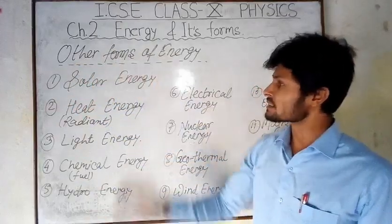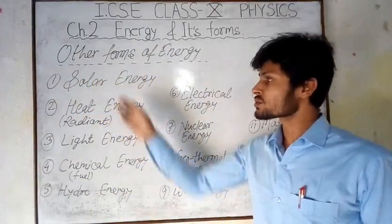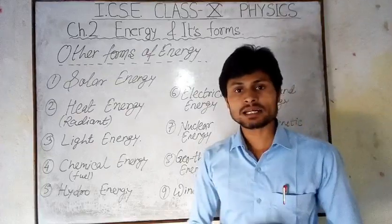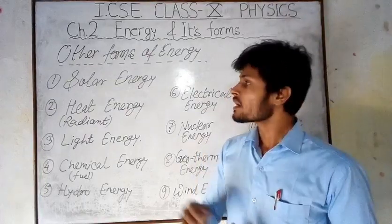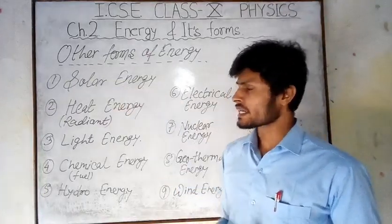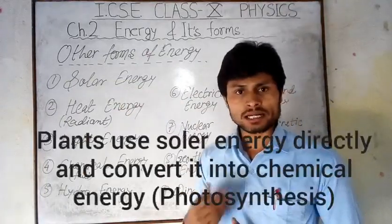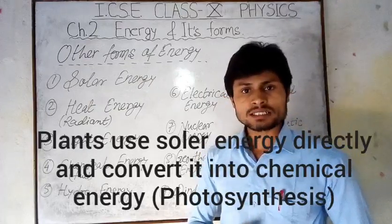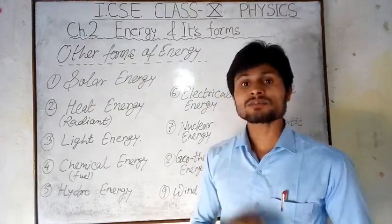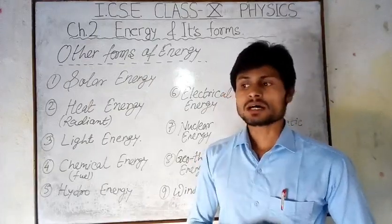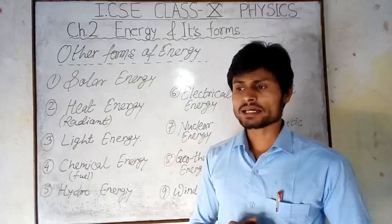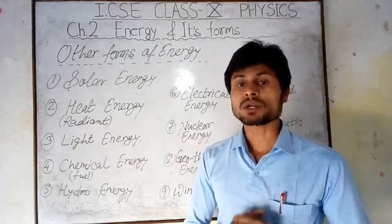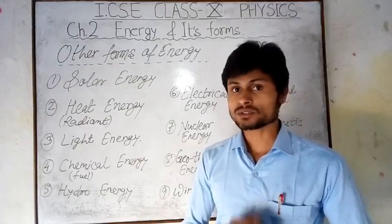Now the other forms of energy. First is solar energy — the energy radiated out by the sun. This energy cannot be used directly, so there are devices to store it for further use. These devices include solar harness, solar cell, solar panel, and solar cooker. The solar panel is used for lighting purposes — it has a metal plate with a black surface that absorbs the sun's radiation.